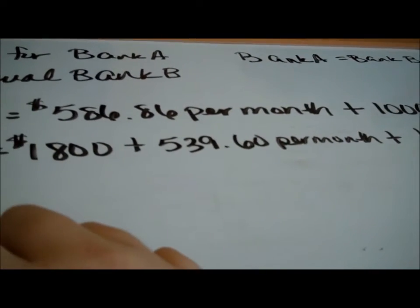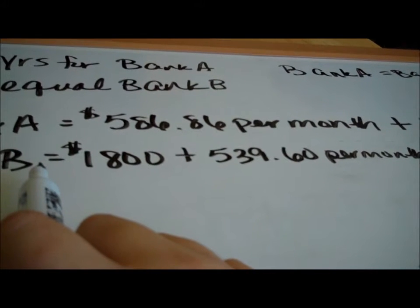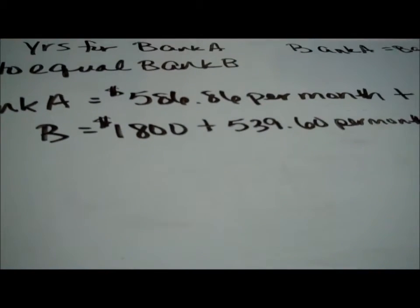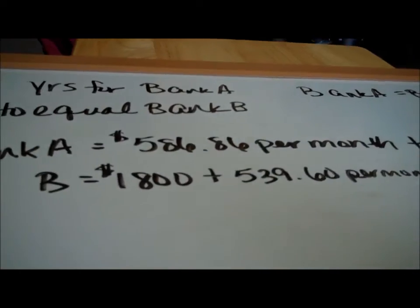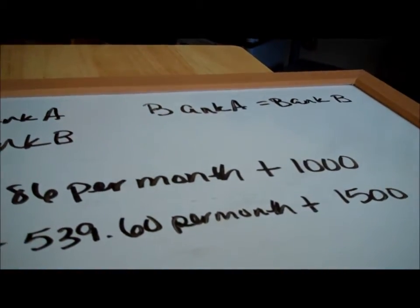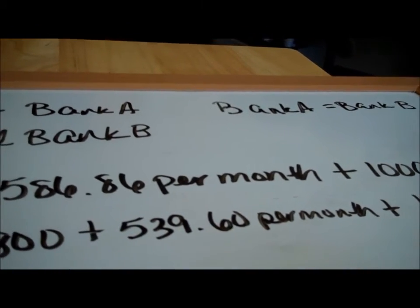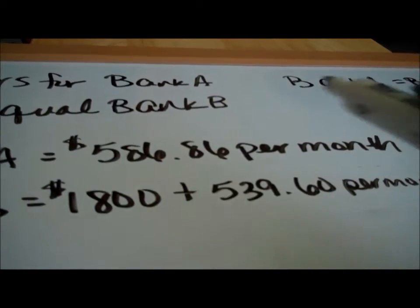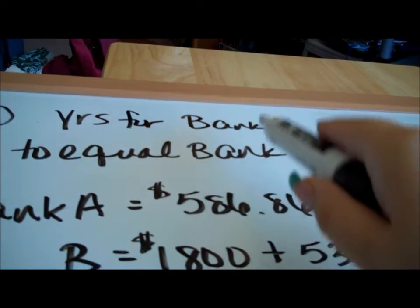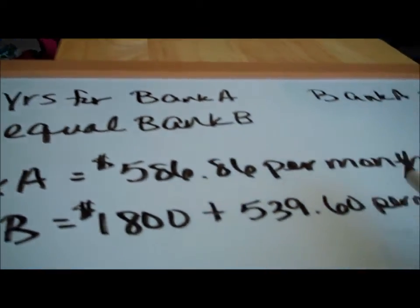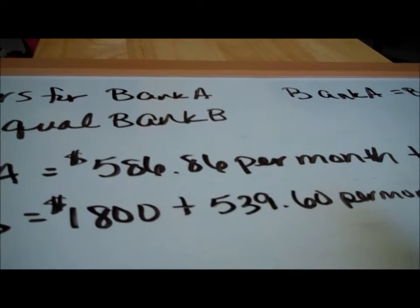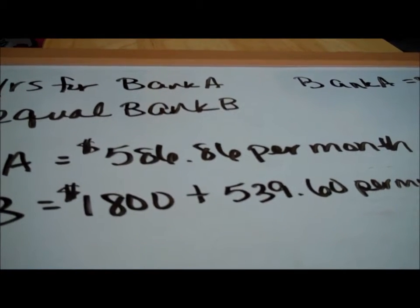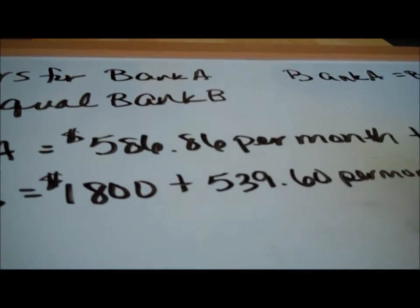Even though Bank B's interest rate is 6%, half a percent lower than Bank A, they're adding on a lot of extra costs. We want to know when Bank A and Bank B are equal — when do the total costs match? Note that the payments are in months, so once we get our answer we'll have to convert months to years. It's asking for years, but we're working with months.